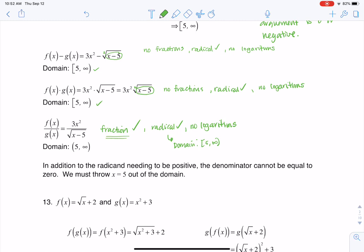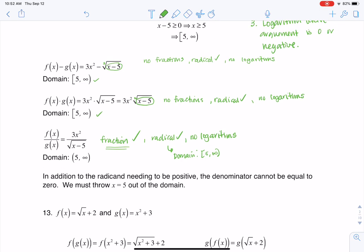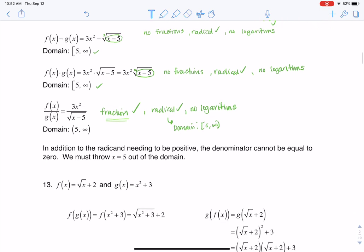But the fraction introduces something new, because in a fraction, you can't have your denominator be 0. Let me scooch this back up. All right, so in a fraction, I can't have my denominator be 0. So let's solve this. If I have to figure out when is my denominator 0, I would square both sides, and I would get x minus 5 equals 0. I would add 5 to both sides, and I would get x equals 5.